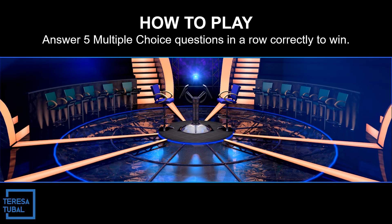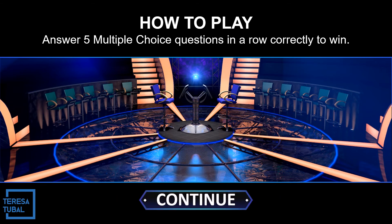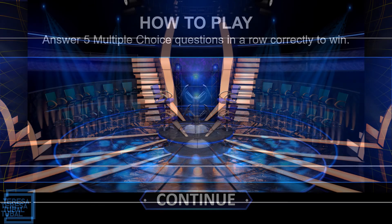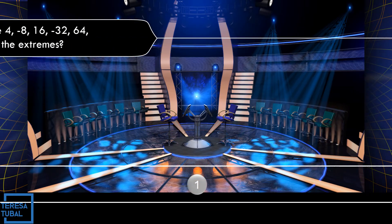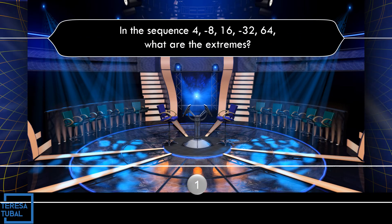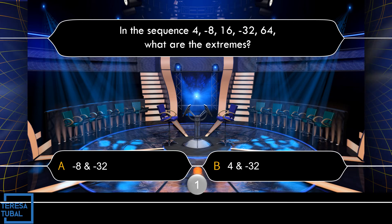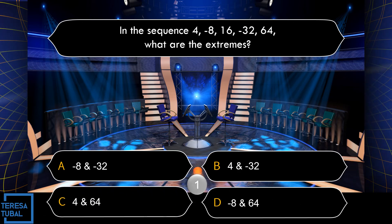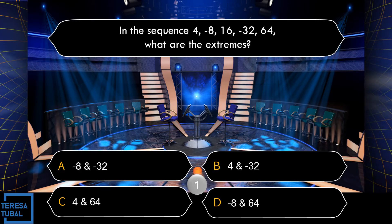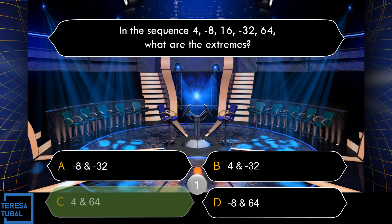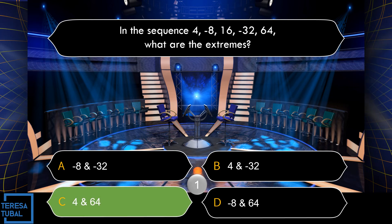How to play: Answer 5 multiple choice questions in a row correctly to win. Let us continue. Question number 1: In the sequence 4, negative 8, 16, negative 32, 64 — what are the extremes? A: negative 8 and negative 32. B: 4 and negative 32. C: 4 and 64. D: negative 8 and 64. Correct! The answer is letter C, that is 4 and 64.